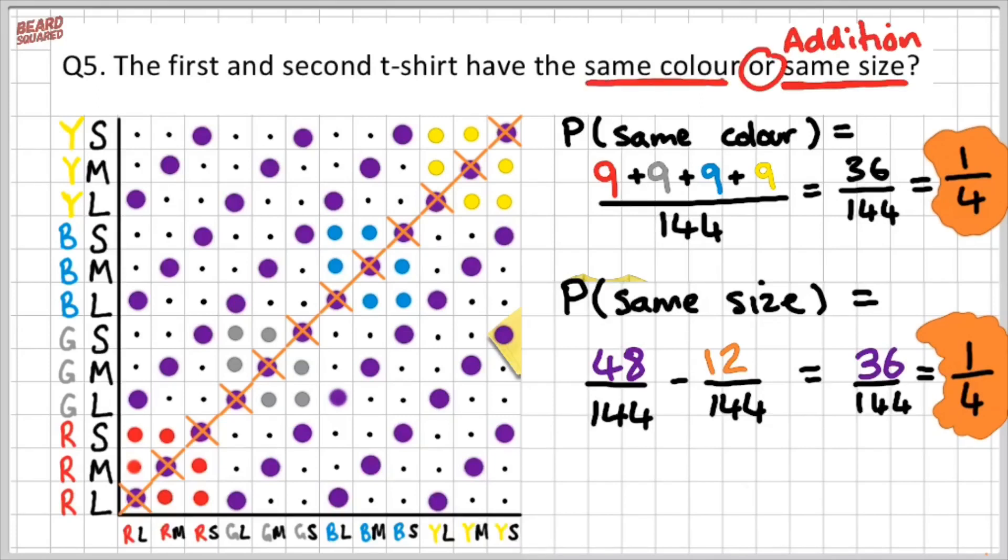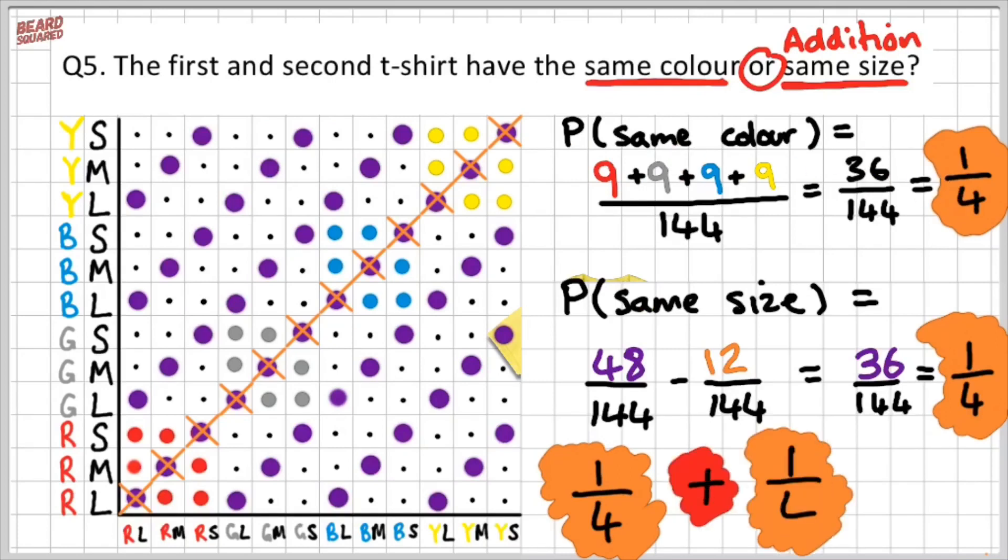So the last step is that we need to consider that we're finding the probability of buying two shirts that have the same color or the same size. So I'm going to add the quarter from the first part of the probability, plus the quarter from the second part of the probability, which gives me a probability of one over two or 50% chance of buying two t-shirts that have the same color or the same size.